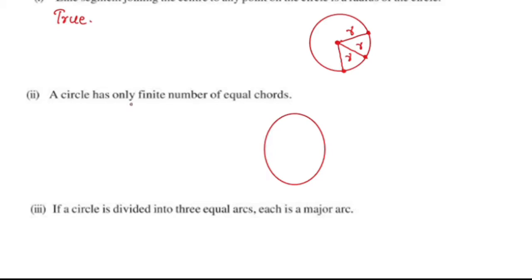Next: a circle has only a finite number of equal chords. The answer is false. Because in a circle, infinitely many equal chords can be drawn.